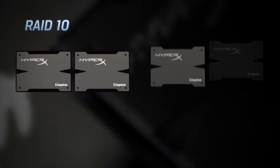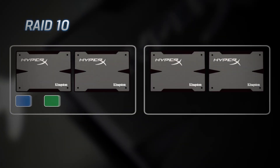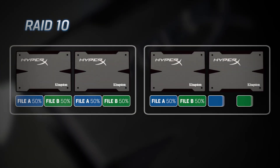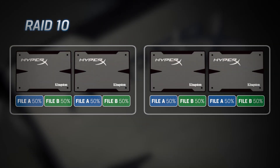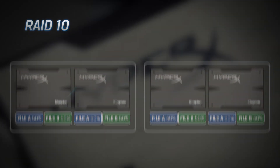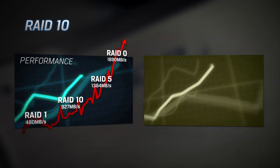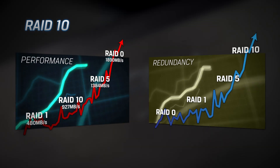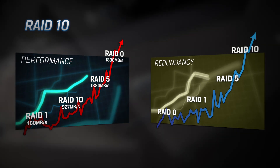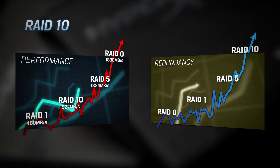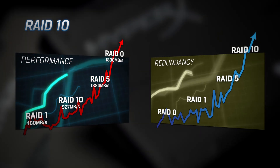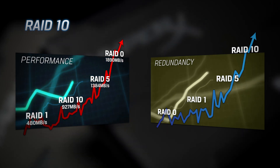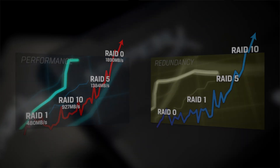RAID 10 is a combination of RAID 0 and 1. RAID 10 offers fast write performance and redundancy. However, you sacrifice half the capacity of the drives you have built into your RAID 10 array. This can be more expensive to implement for larger data sets.